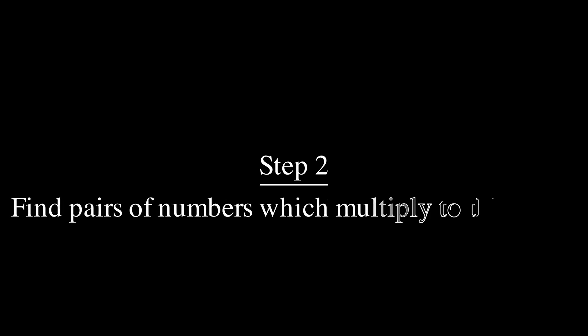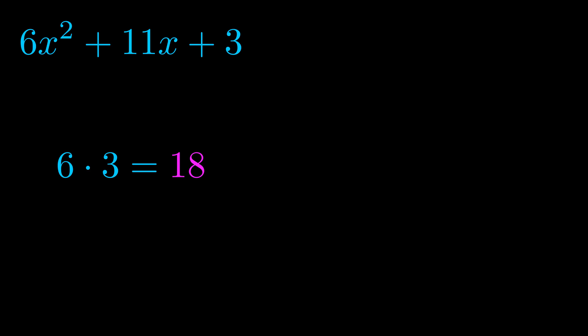Step two is to try to find all of the pairs which multiply to this number. Now it turns out you don't really need to find all of them, but go ahead and write down as many numbers as you can that multiply to the magenta value for now. Pause the video and resume when you're ready to continue. Okay, here's what I came up with.